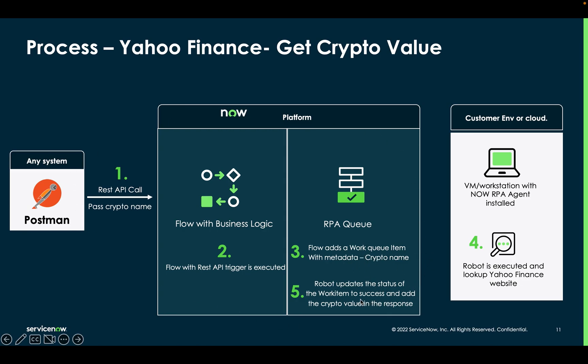My demo won't go further than that, but in real life, once the work item is marked as completed or success, you could have additional business logic — for example, assigning a new task to another robot, or to a human who needs to fulfill a request or continue the process. Here I'm just ending the demonstration at that point.